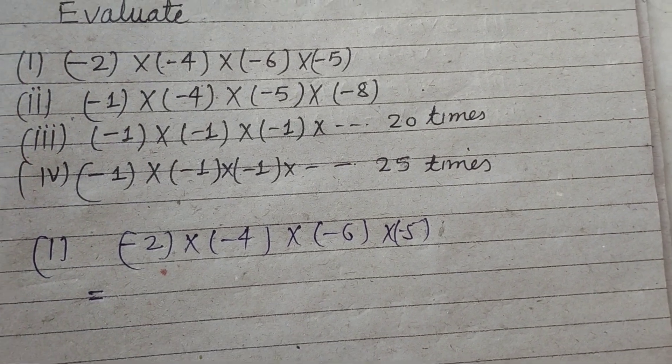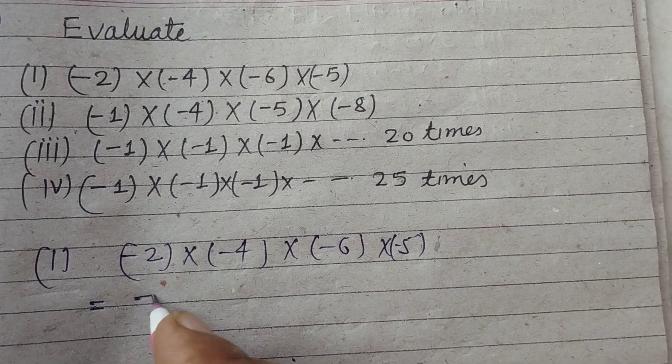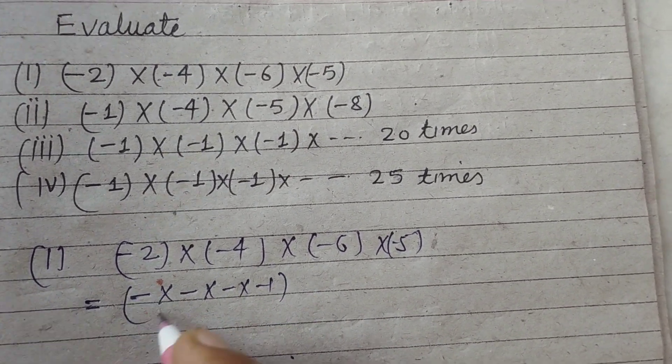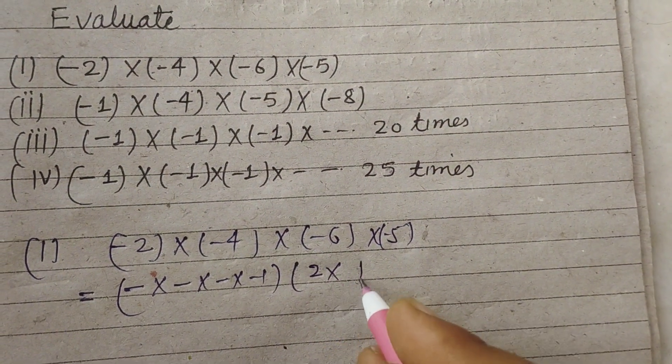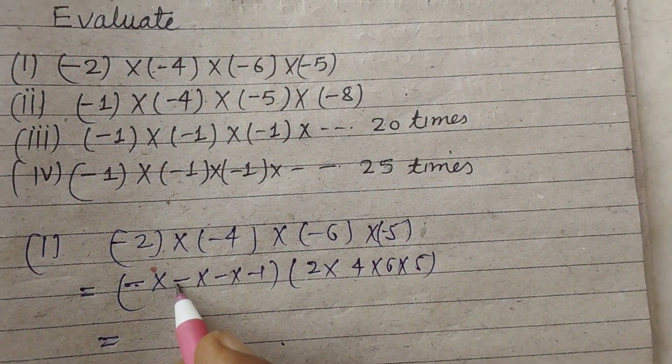First we multiply the signs. So here minus into minus into minus into minus. Now the digits or numbers are 2, 4, 6, and 5. So minus into minus is plus.